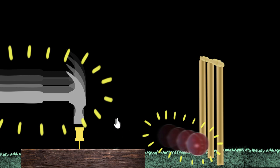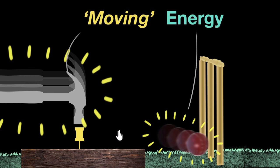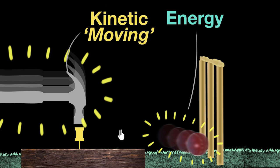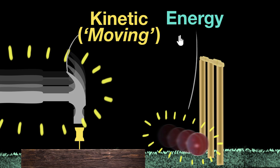We can give a name to this energy — we can call this moving energy. But in physics, we give it a more technical term: it's called kinetic energy. The energy of an object due to its motion is called kinetic energy. Some other examples include wind, which is moving air, and waves in water also have kinetic energy because there is motion involved.